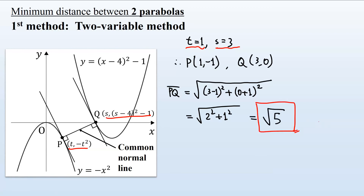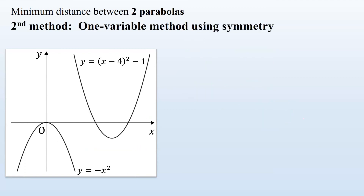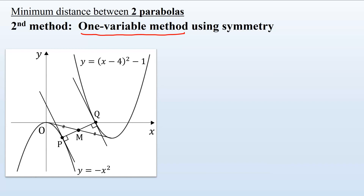Now for the second method — the one-variable method — we use the same principle: the distance PQ is minimum when line PQ is the common normal to both parabolas. Notice that the two parabolas are symmetric with respect to M, the midpoint between their two vertices. Therefore, the common normal line PQ must pass through this point of symmetry M, and M is also the midpoint of segment PQ.